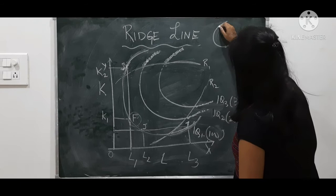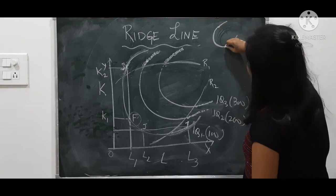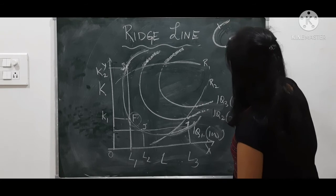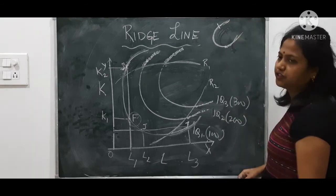From here to here is the efficient zone, but from here onwards it is inefficient, from here onwards it is inefficient.